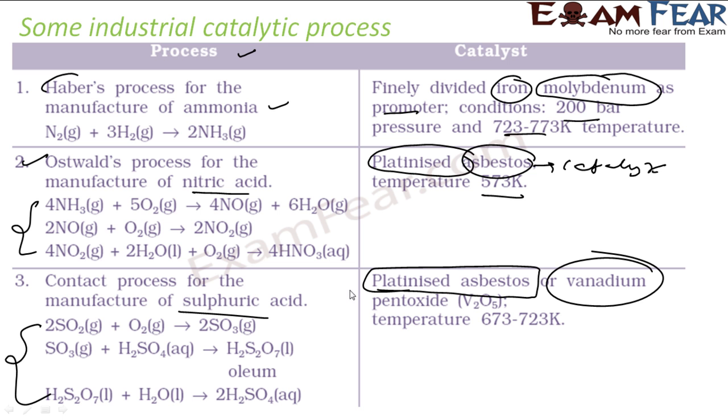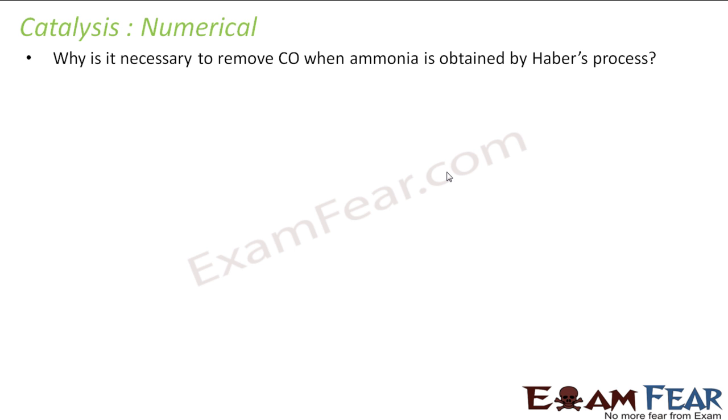In most of these very famous industrial processes to manufacture ammonia, nitric acid, and sulfuric acid, catalysts are used. Without catalysts, it's very difficult to prepare these chemicals and it would be very costly, but with catalysts it's easier and the cost is less.